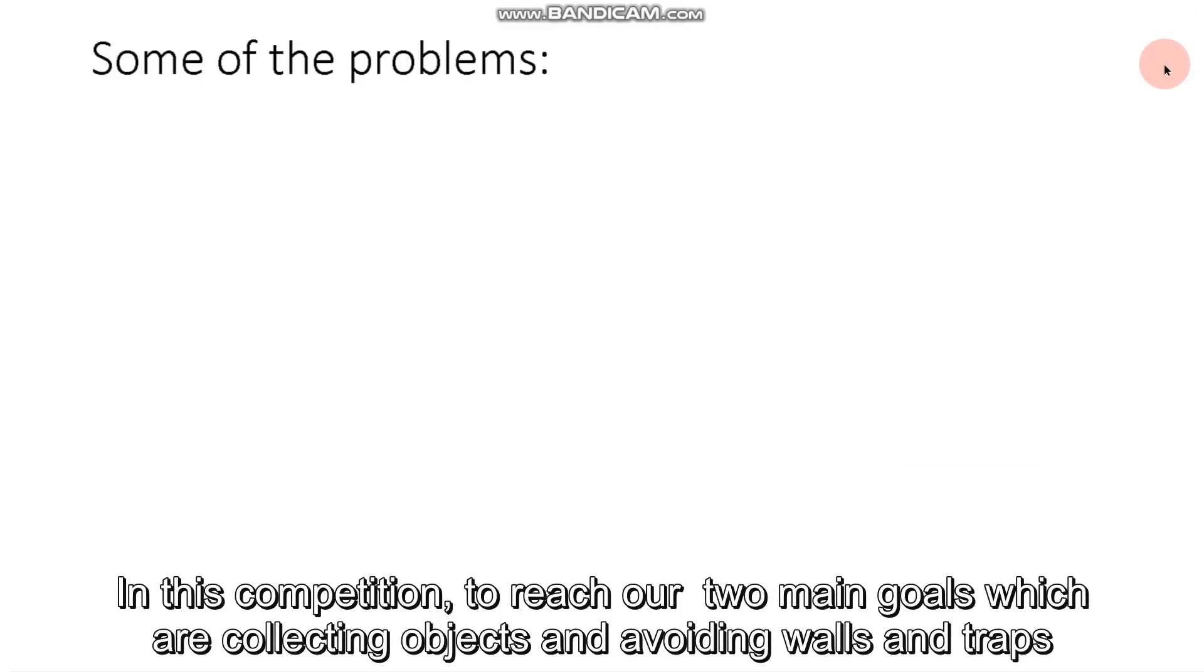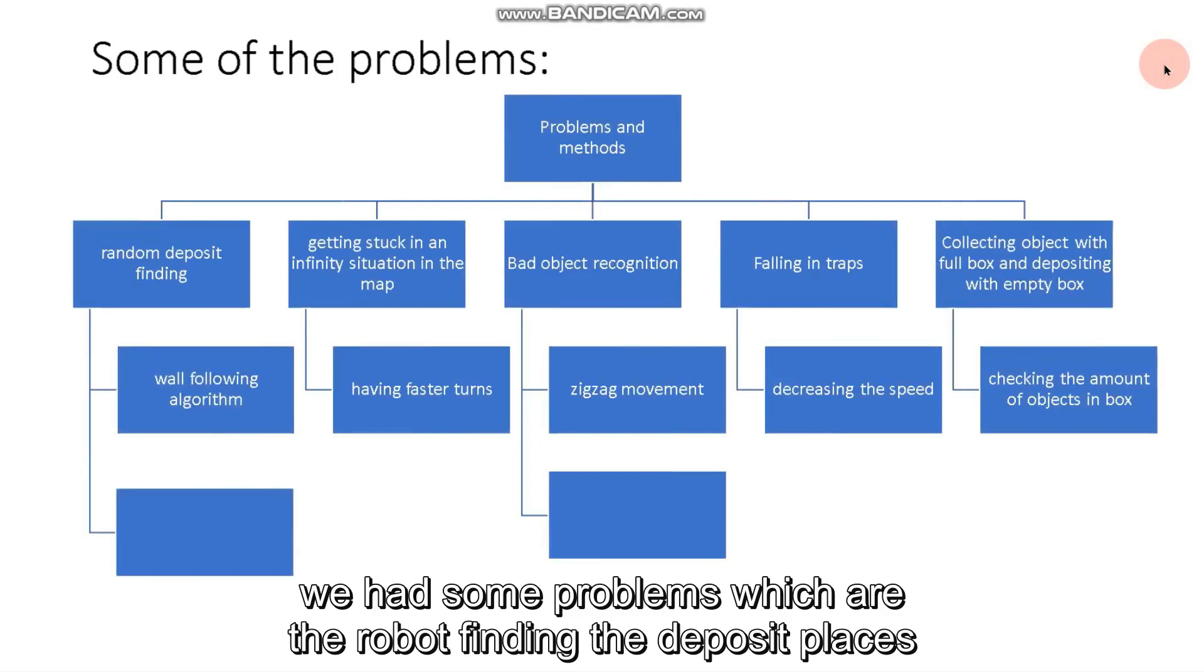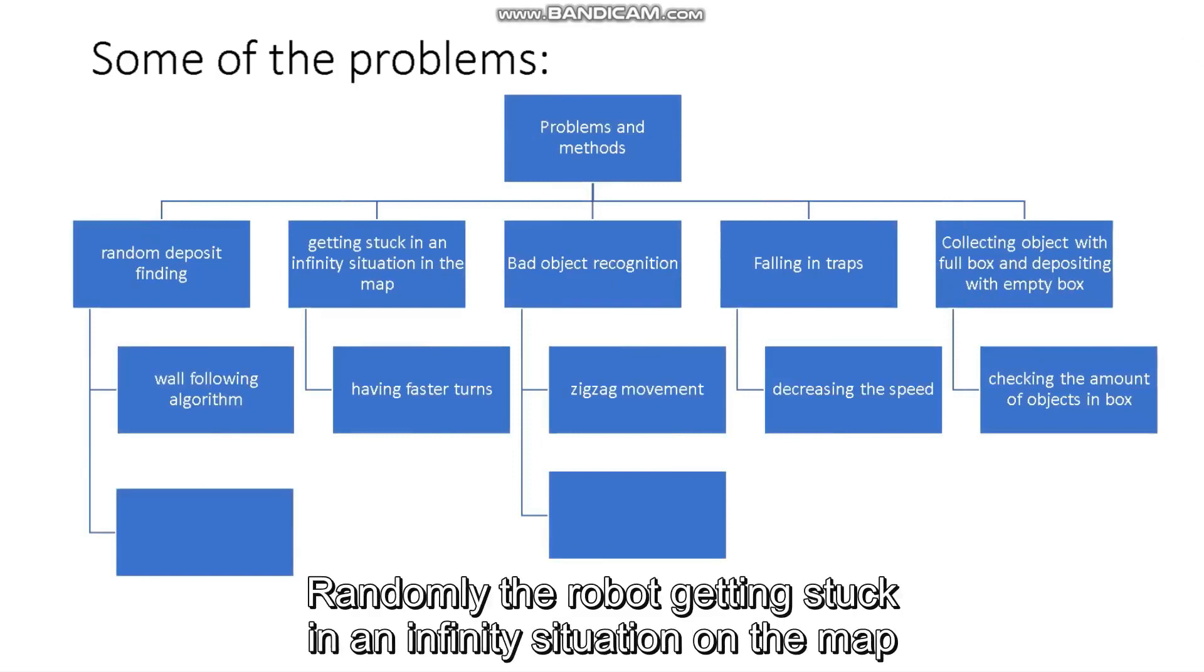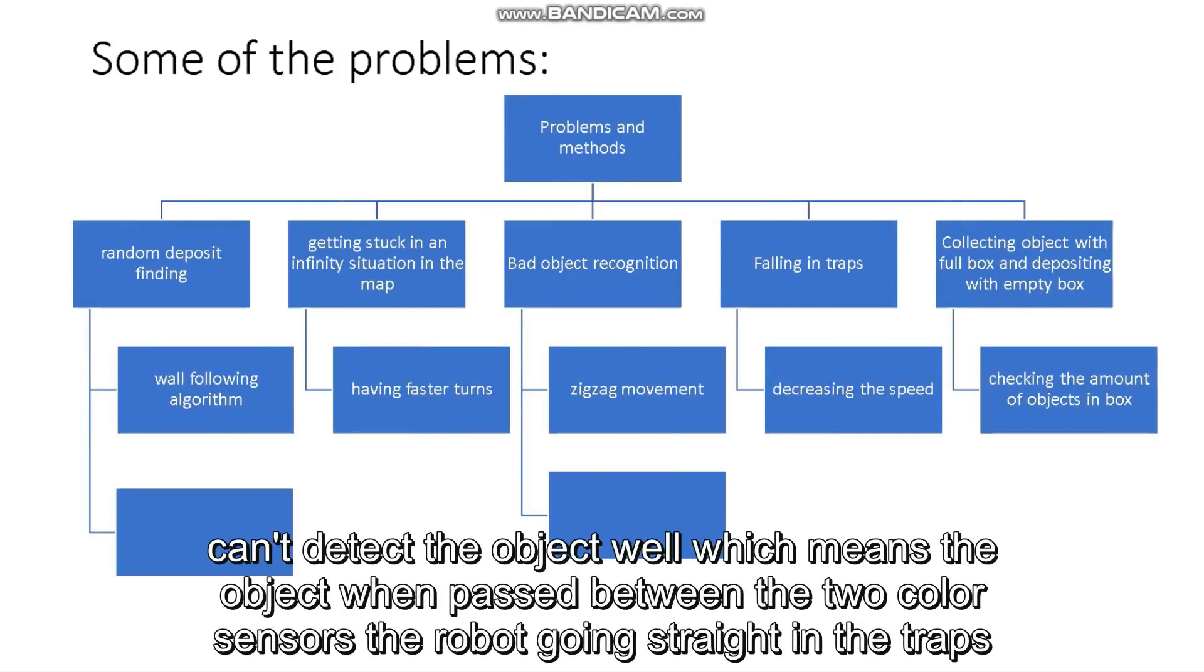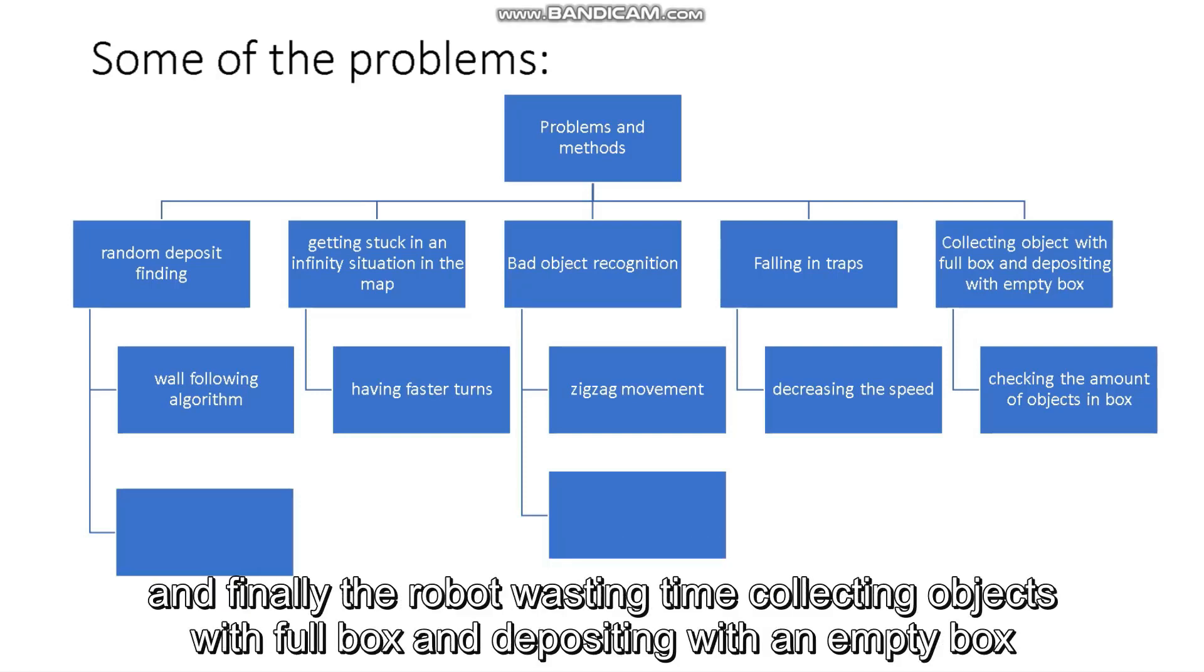In this competition, to reach our two main goals, which are collecting objects and avoiding walls and traps, we have some problems, which are the robot finding the deposit places randomly, the robot getting stuck in an infinity situation on the map, not detecting the objects well, which means the object went past between the two color sensors, the robot going straight into the traps, and finally, the robot wasting time collecting objects with a full box and depositing with an empty box.